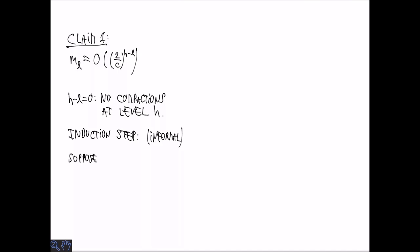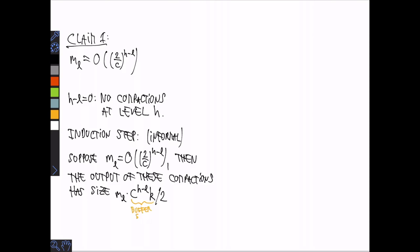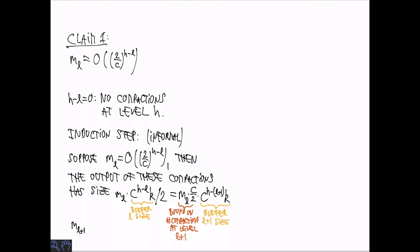So in the induction step, and I'm not going to be completely formal here, let's suppose that we actually know that M of L has the right upper bound and then we want to consider the level before, L minus 1. And let's consider one level. The output of all the compactors of that level is the number of compactions times the buffer size divided by 2, because we do the compaction. So we can write that. So this is equal to number of compactions times C over 2 times the buffer size on the next level. And since we only do compactions when a buffer is full, this gives us an upper bound on the number of compactions at level L plus 1. Now consider M L minus 1. It should be L minus 1 on the slide. We can upper bound that by M of L times C over 2. And then by the induction hypothesis, this is upper bounded by the claimed amount.